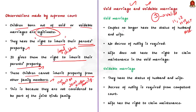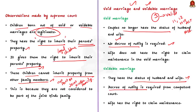In a void marriage the couples no longer have the status of husband and wife, but in a voidable marriage they have the status of husband and wife. In a void marriage no decree of nullity is required, whereas in a voidable marriage the decree of nullity is required from a competent court. Another important difference is that a wife does not have the right to claim maintenance in a void marriage, but in a voidable marriage she does.